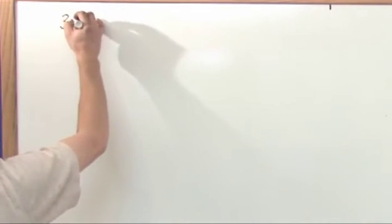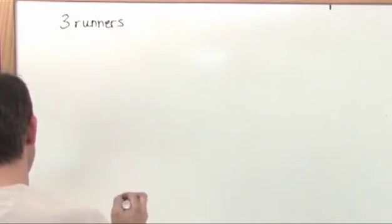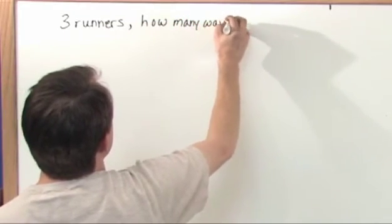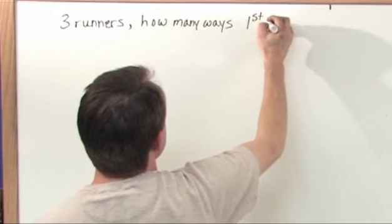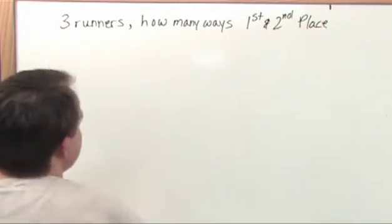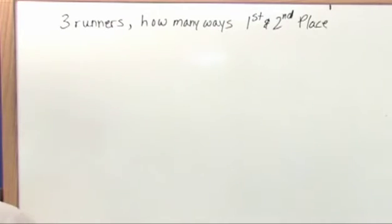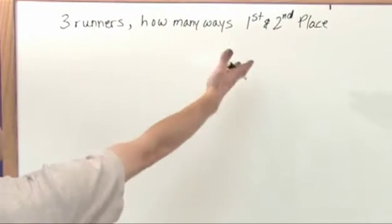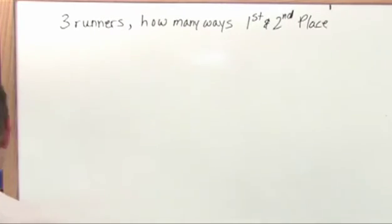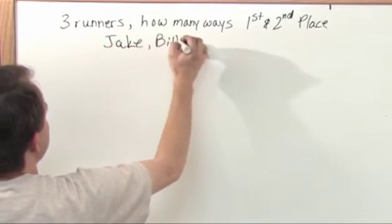Let's talk about a race. We have three runners. I'm going to do this really quickly because you just watched the section. Three runners, how many ways can we get first and second place? Now you know this is a problem in permutations from the last section. If I had, for instance, Jake, Bill, and Sarah...